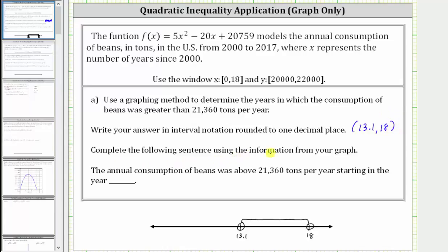Next, complete the following sentence using the information from the graph: the annual consumption of beans was above 21,360 tons per year starting in what year? X equals 13 represents the beginning of the year 2013, and x equals 14 represents the beginning of the year 2014. Because x is approximately 13.1, sometime in the year 2013 the consumption goes above 21,360 tons per year. So here we enter 2013.